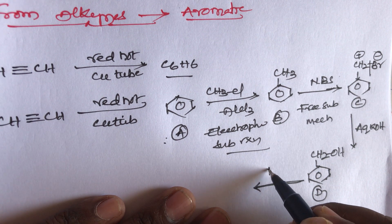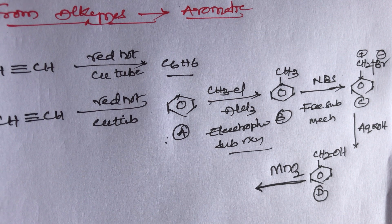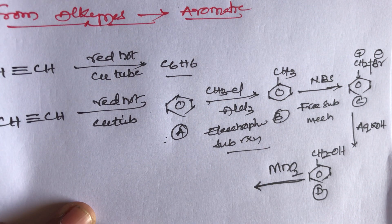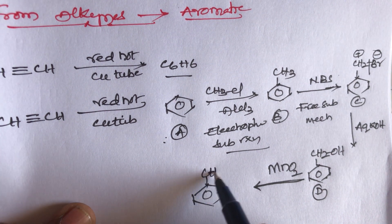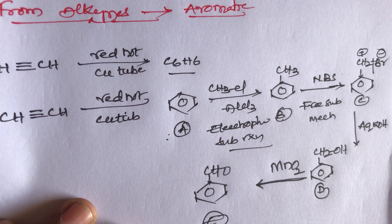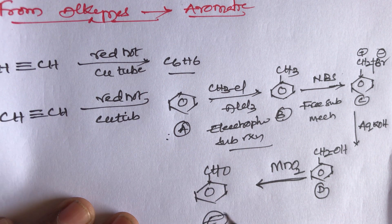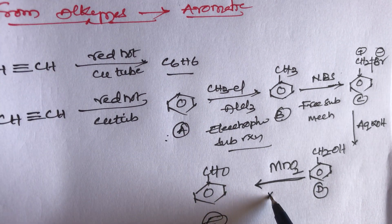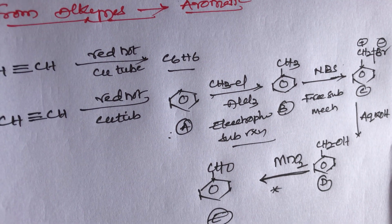This benzyl alcohol reacts with MnO₂ — manganese dioxide — which is a moderate oxidizer. MnO₂ acts as a moderate oxidizer — it can oxidize only benzyl alcohol and allylic alcohol, not other alcohols. This is a very important point — MnO₂ can oxidize only benzyl alcohol and allylic alcohols.